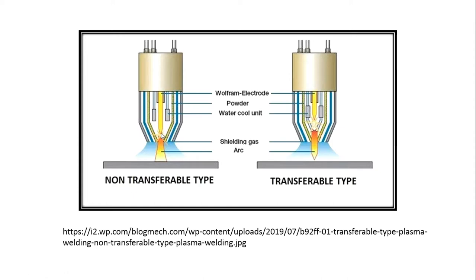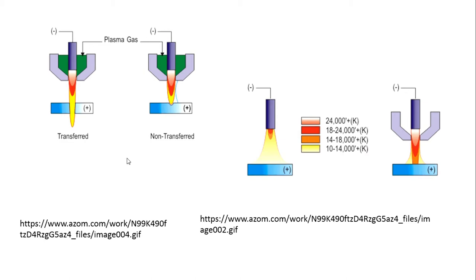Because we are using high-temperature applications for welding heavy-thickness materials, the torch should have a water-cooled option. In non-transferred mode, the arc will not penetrate deeper — we get only surface-level heating. In transferred mode, the arc will penetrate fully and we can sometimes get excess penetration as well.